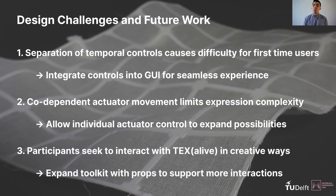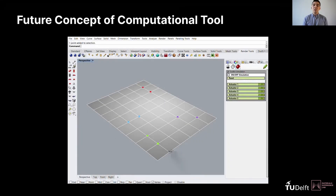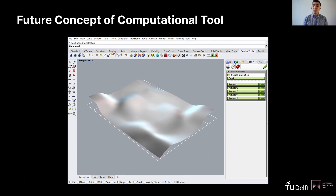Lastly, to support designers in interacting with the textile interface, we suggest expanding the toolkit with simple props such as bands or clips to allow users to easily wear the textile around their body or hang it on a wall. The discussion with the seven designers additionally inspires us to further explore the possibilities for digital simulation of the physical interface, combining digital and physical workflows in prototyping temporal expressions.